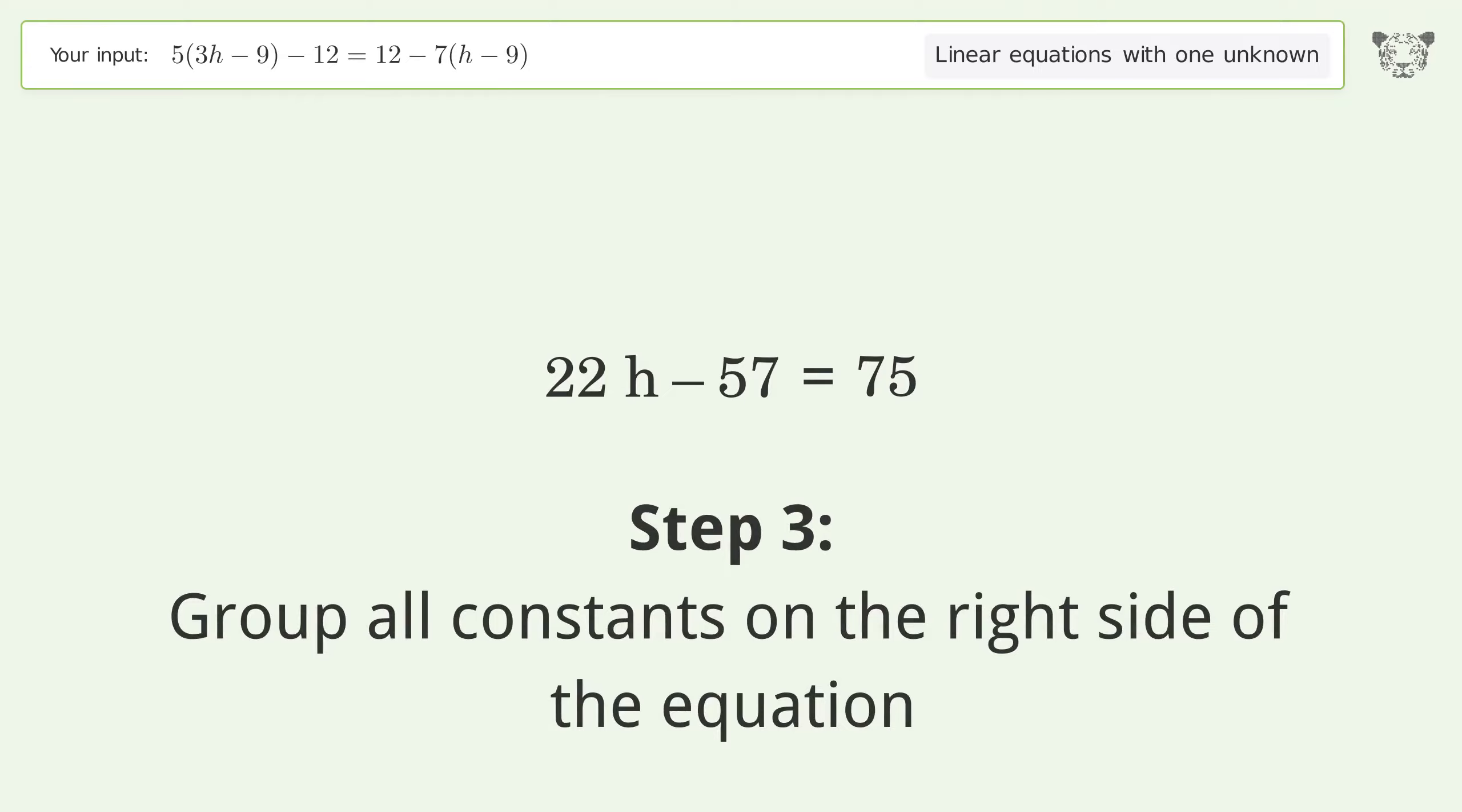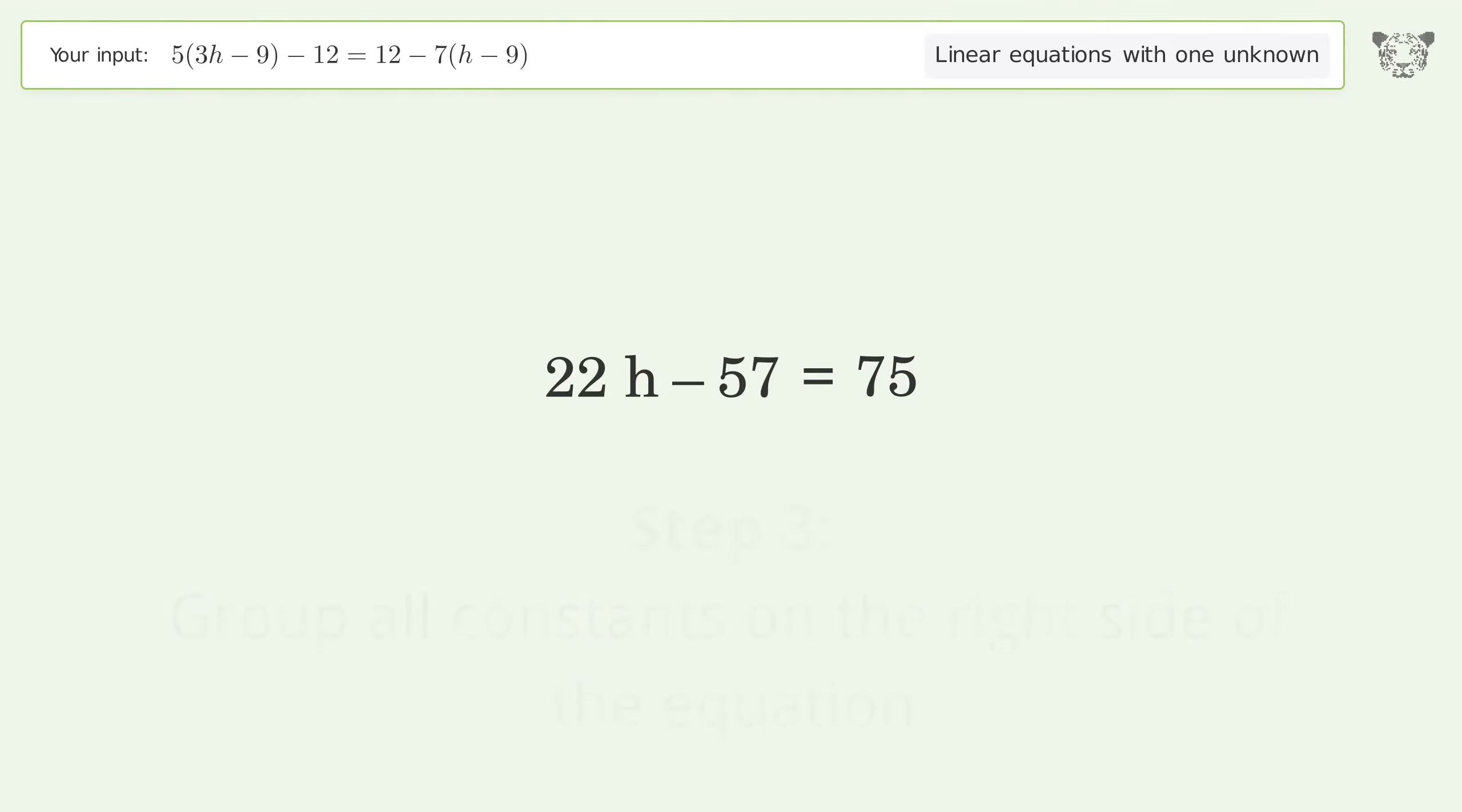Group all constants on the right side of the equation. Add 57 to both sides. Simplify the arithmetic.